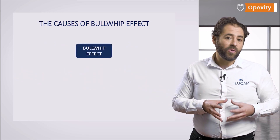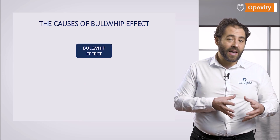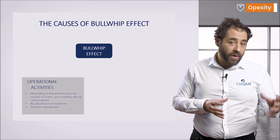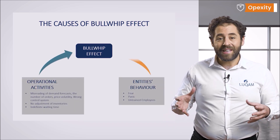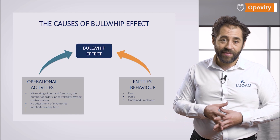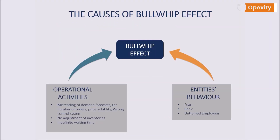The causes of the bullwhip effect were divided into two categories, which result either from the operations or the behavior of the entities in the supply chain. The first category includes, among other things, misreading of the demand forecasts, the size of the order, price fluctuations, incorrect control systems, the lack of regulation of stocks, and undefined waiting times. The behavior of the entities is associated with the fear due to the lack of inventory in the warehouse or a lack of trained personnel.